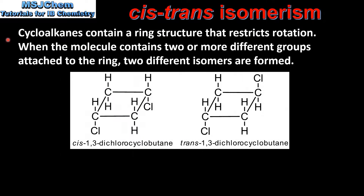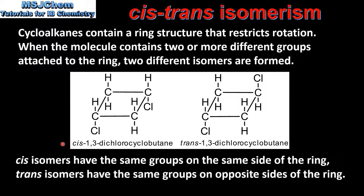Next we look at cyclic molecules. Cycloalkanes contain a ring structure that restricts rotation. When the molecule contains two or more different groups attached to the ring, two different isomers are formed. On the left we have cis-1,3-dichlorocyclobutane.